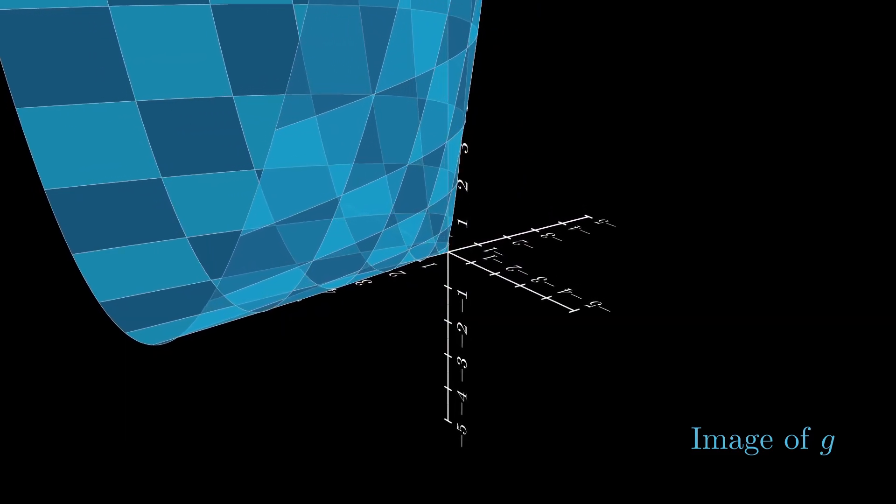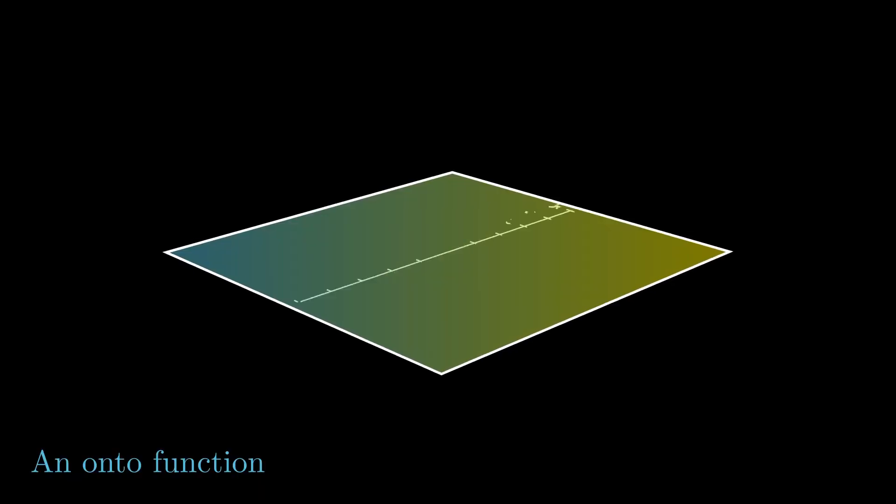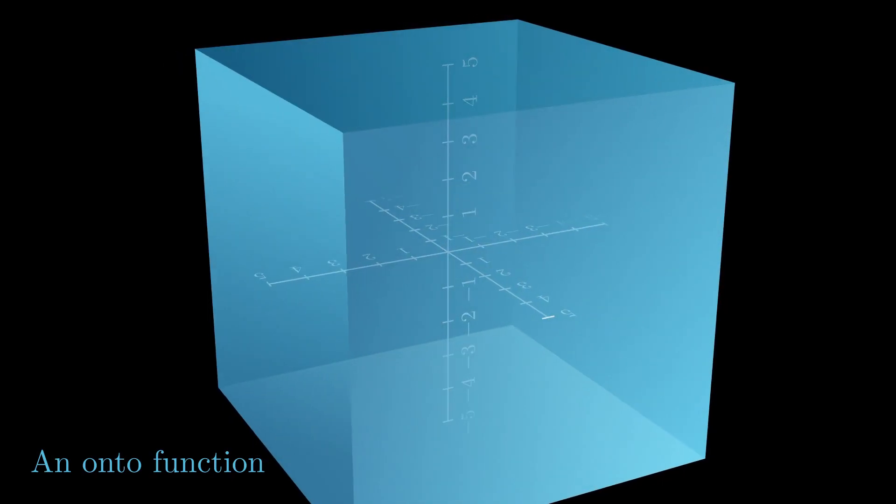Okay, but what does it mean for a function to be onto? Let's get back to the question. Well, an onto function is one that fills its output space. And this should seem pretty hard, and it is.